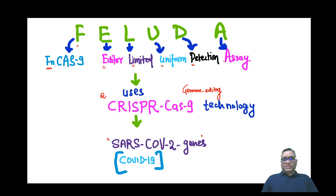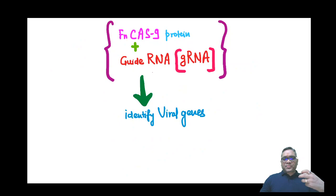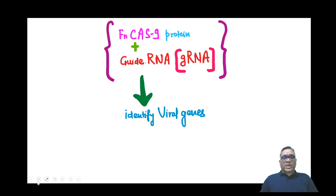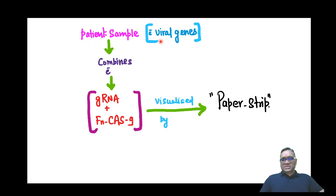In this test, the FN-Cas9 protein will be combined with the guide RNA. This combination is going to identify the viral genes. When we collect a patient sample that is supposed to contain viral genes, this combination identifies those viral genes.